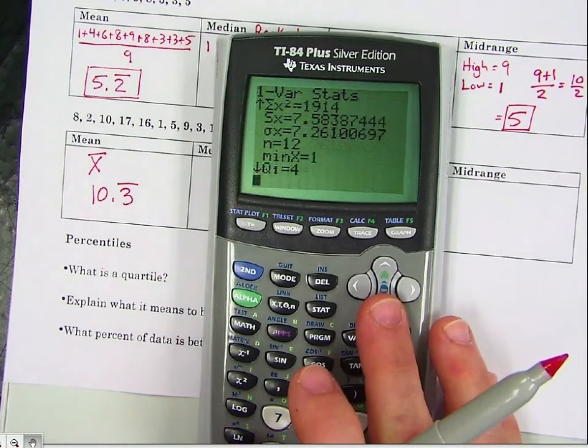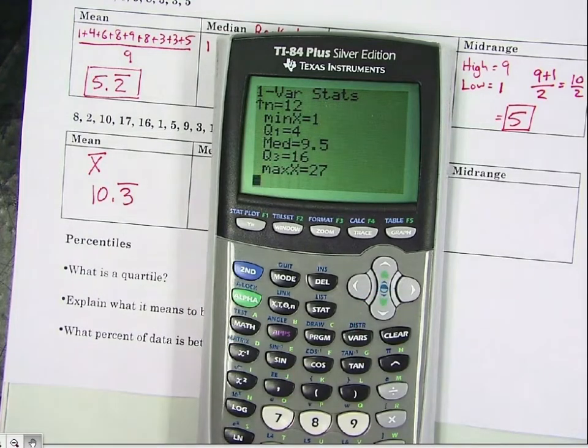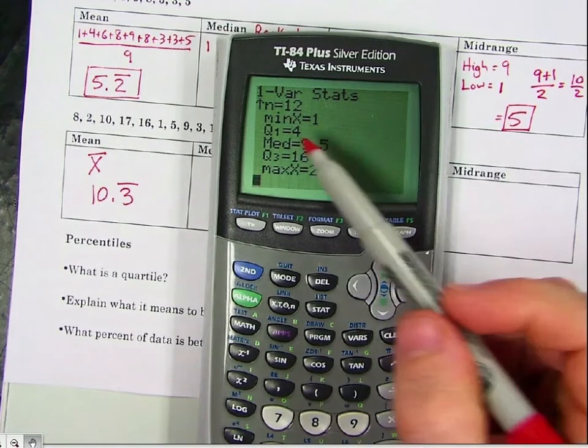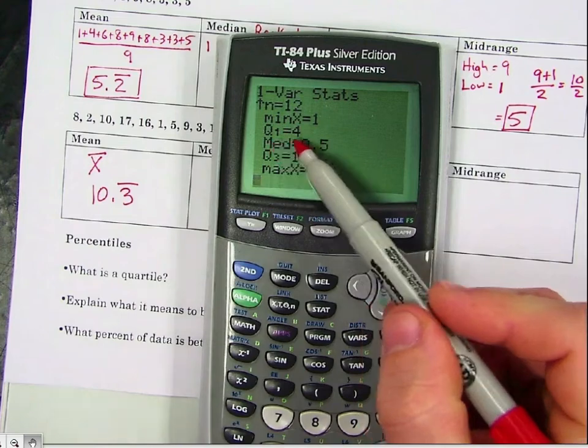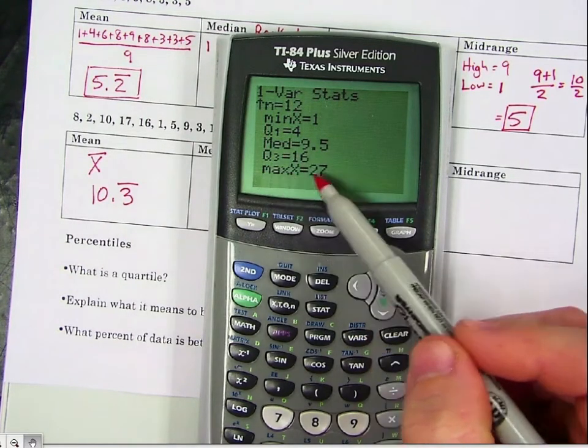If we keep scrolling down, we get a few other pieces of data. We have min X is 1, Q1 is 4, MED is 9.5, Q3 is 16, max X is 27.